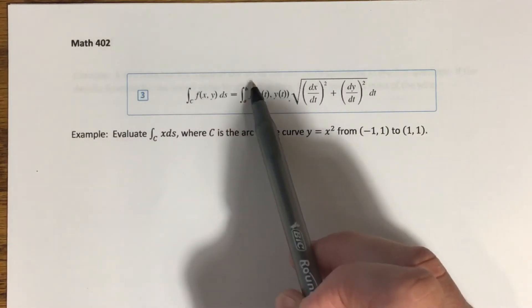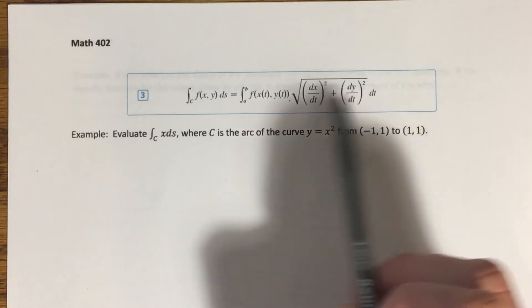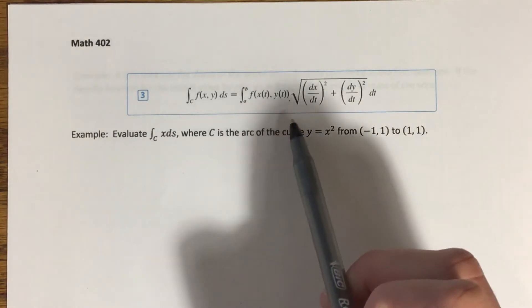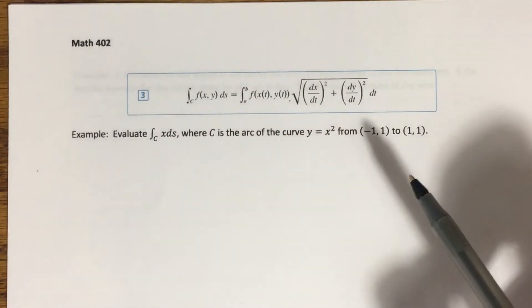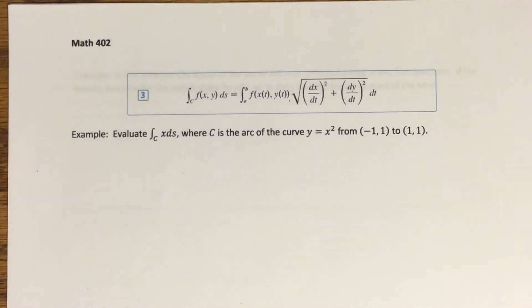And then the a, b, notice the line integral becomes an integral of a single variable t, a definite integral, so we have limits of integration as well. A and b are the upper and lower bounds on t in our definition of our parametrization. So the very first thing you want to do any time you're evaluating a line integral, unless it's given to you from the beginning, is determine a parametrization for the curve that you're integrating over.